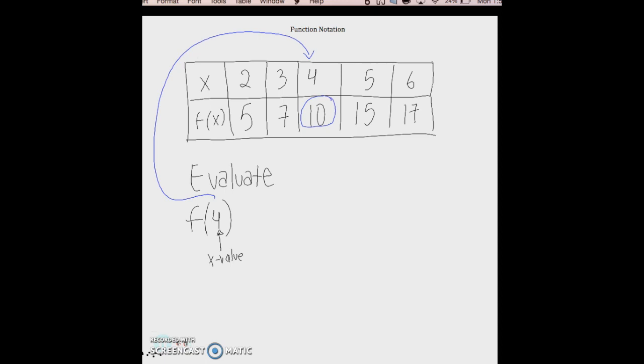Similar to other ones. So if I were to say f of 6, again this is an x value, so you go to your table. See, okay, where's my x value of 6? Well, that one has a y value of 17, so f of 6 equals 17.